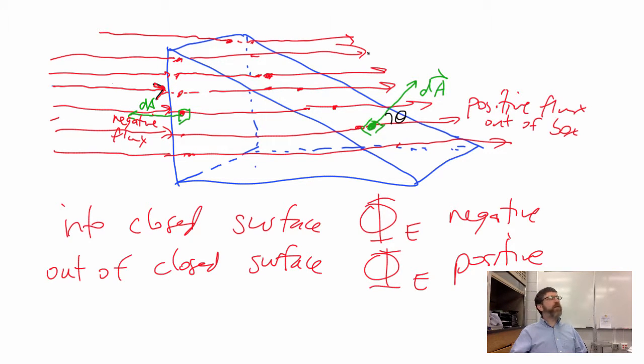Because whatever stream of water goes in is just going to come out later. This box is not trapping any water. If you had like a bucket, you might have a net flux into it because it can't get out. But a surface like this and with electric fields, or if this was a screen for water, whatever water goes in also goes out. That is a net flux of zero.